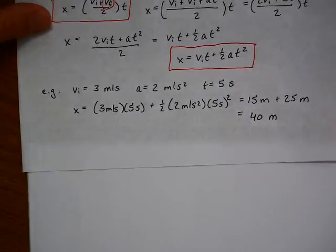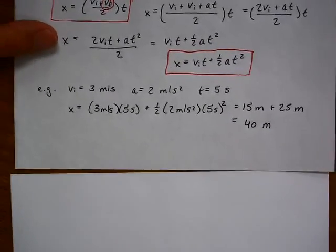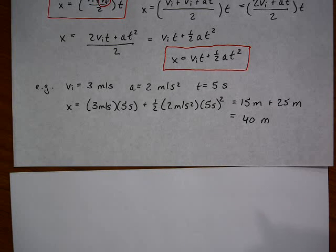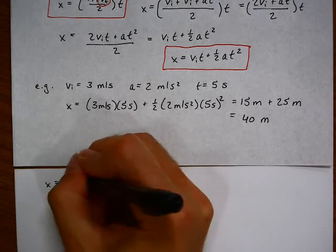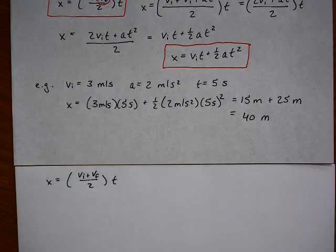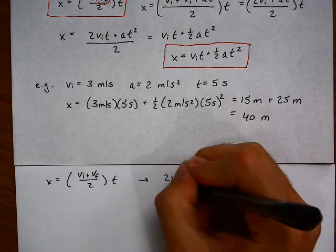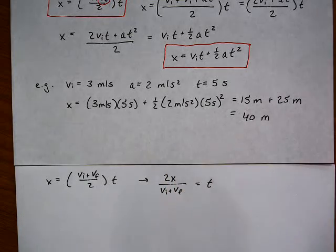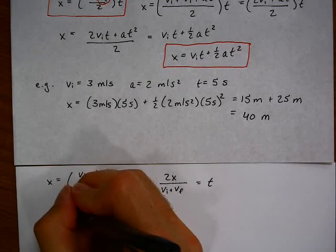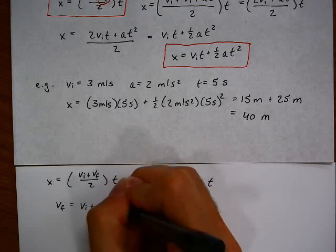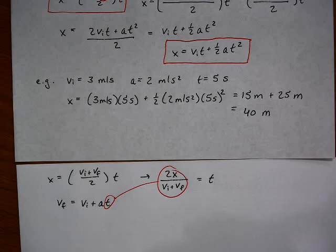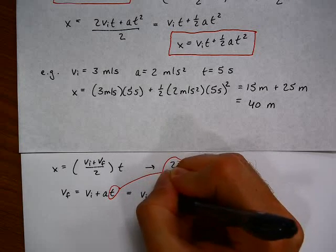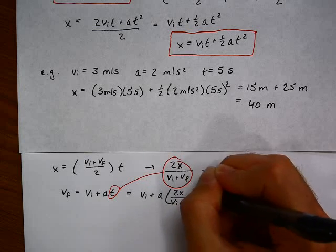We now move on to our final kinematic equation. Here we begin with an equation that we've already used and we solve for T. We now make a substitution into this equation. This value for T gets substituted in, and that results in this expression.